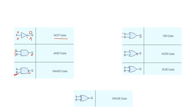Here we have the XOR gate. The XOR gate is the same as the OR gate but we have an additional shape here. We have two inputs and one output. And over here we have the XNOR gate, because we have a NOT circle here. We have A, B, and the output.